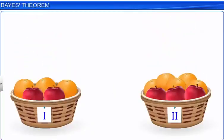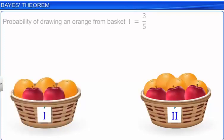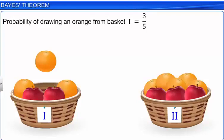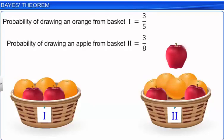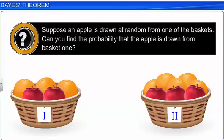Here are two baskets. There are two apples and three oranges in basket 1, and three apples and five oranges in basket 2. The probability of drawing an orange from basket 1 is 3/5, and the probability of drawing an apple from basket 2 is 3/8. In both cases, the fruit drawn is given and the basket from which the fruit is drawn is also given. Suppose an apple is drawn at random from one of the baskets. Can you find the probability that the apple is drawn from basket 1?